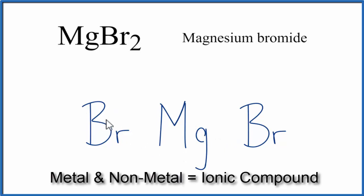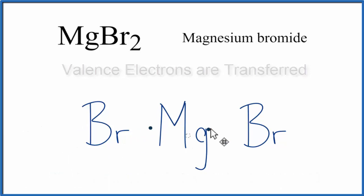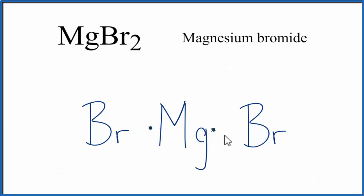In an ionic compound, valence electrons are transferred. Magnesium is in group 2, so it has 2 valence electrons. Bromine is in group 17, sometimes called 7A, and it has 7 valence electrons.